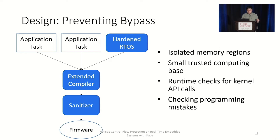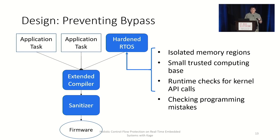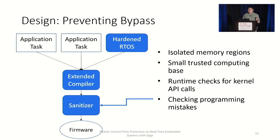Kage also prevents attackers from bypassing the protections. We designed the real-time operating system with isolated memory regions so that applications cannot write into each other's stack memory or kernel memory. We use a small trusted computing base, removing many kernel features from it into the unprivileged world. We add runtime checks for all remaining kernel functions so attackers cannot use corrupted arguments to bypass protections. Since everything runs in privileged mode, we also include a sanitizer that checks for programming mistakes in application code — for example, whether application code overwrites the stack pointer or calls internal kernel functions that lack runtime checks.